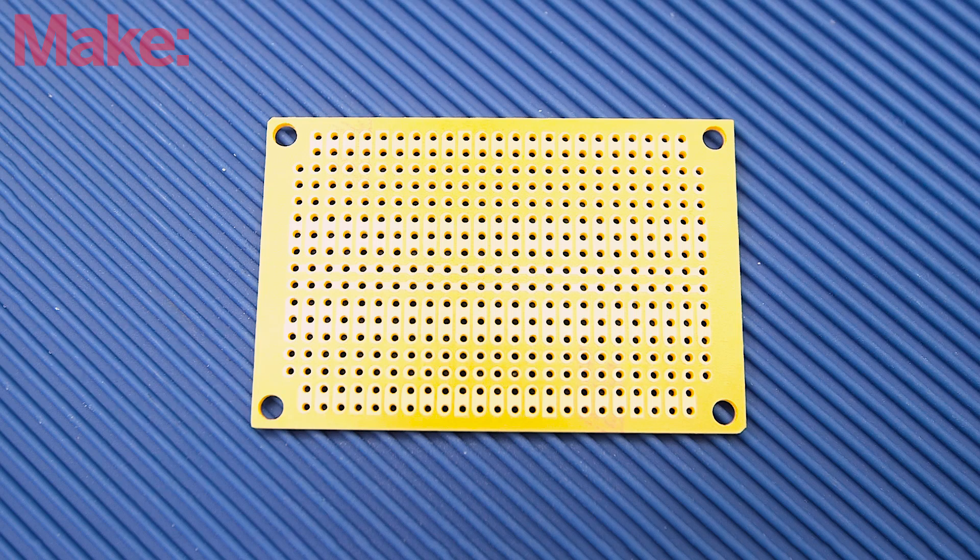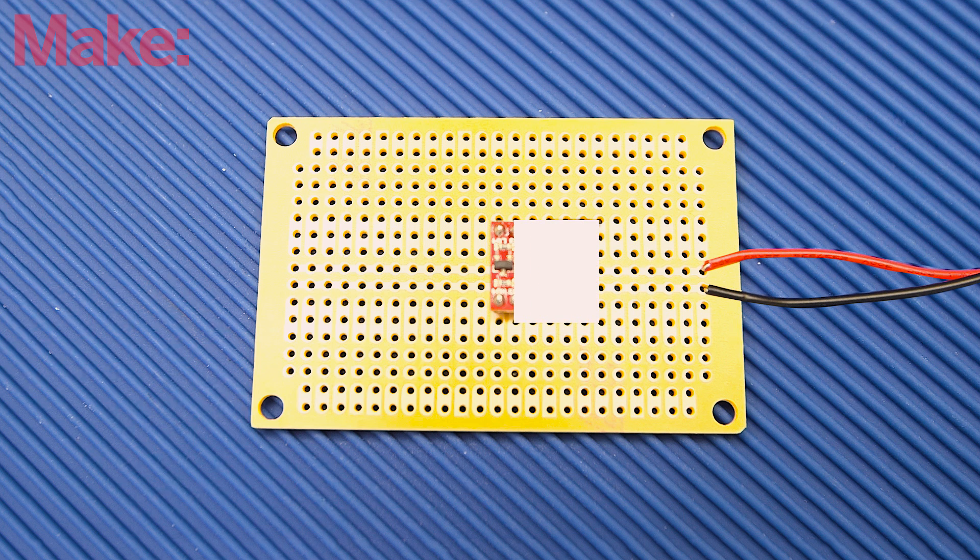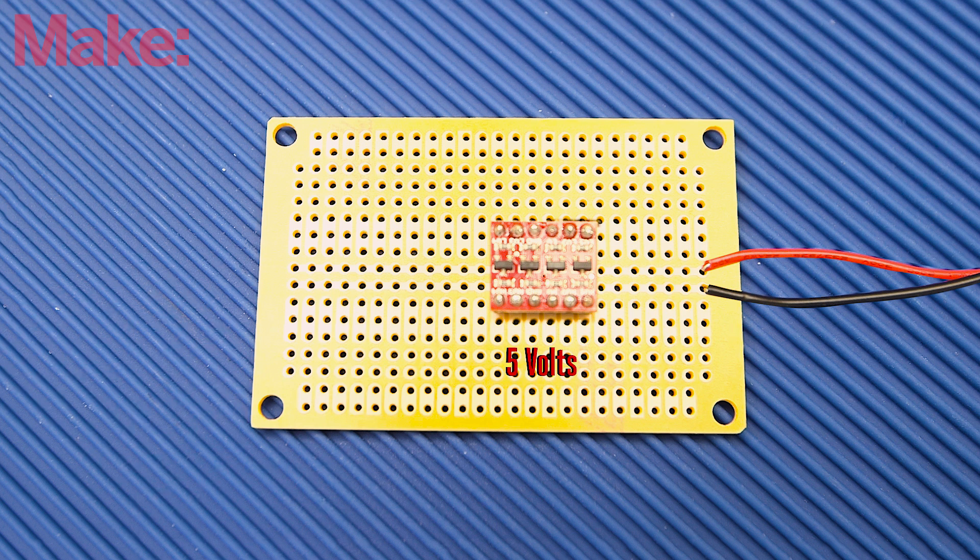Power comes from the 9-volt jack in the back of the mannequin head and travels down the left power rails of the perf board. The small red logic-level converter bridges the two halves of the perf board, separately managing 5 volts on the left, supplied by the Arduino, and 3.3 on the right for the ESP8266 Wi-Fi board.